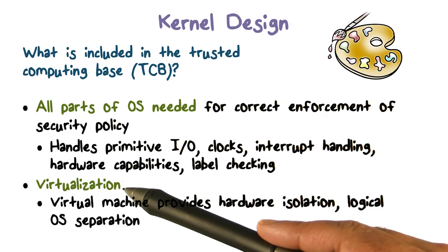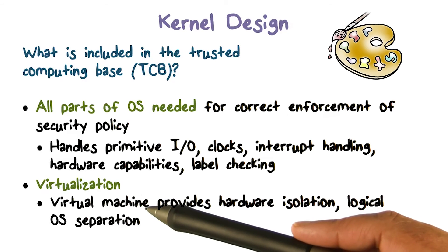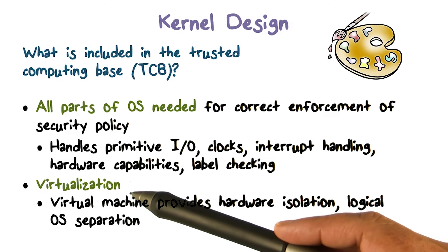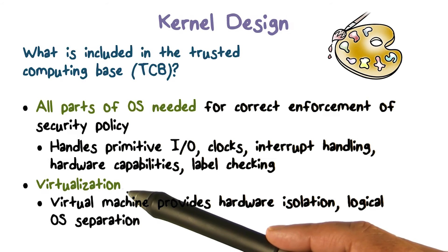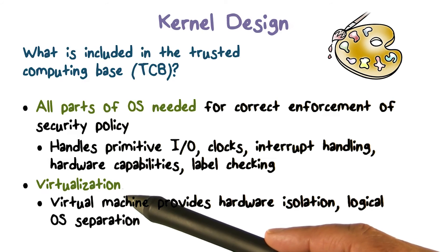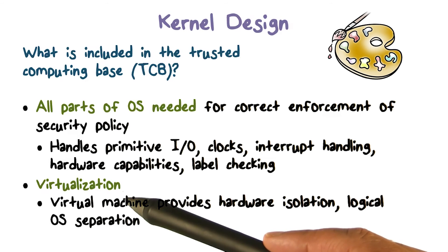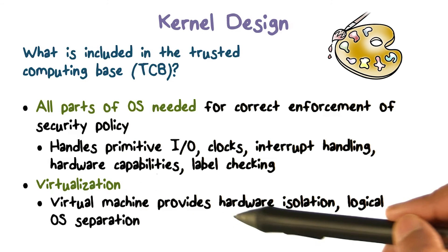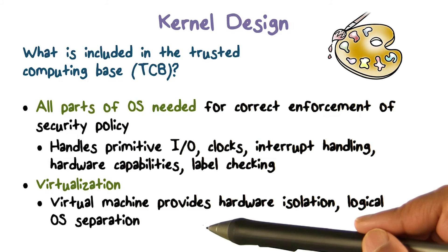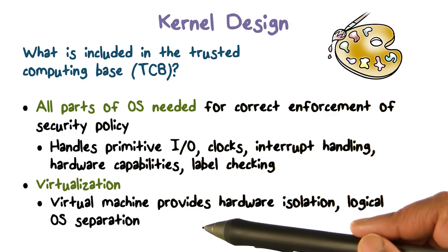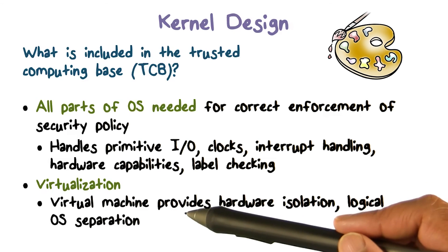The other thing we did is sort of virtualization. One way we get complete mediation so untrusted code can't bypass it is that untrusted code has handles for virtual resources — unless we're talking about capability-based systems. This virtualization mechanism, going from virtual to physical resources, helps us isolate the hardware from untrusted code and allows us to do separation in actual memory.